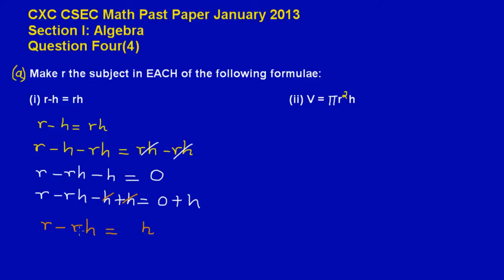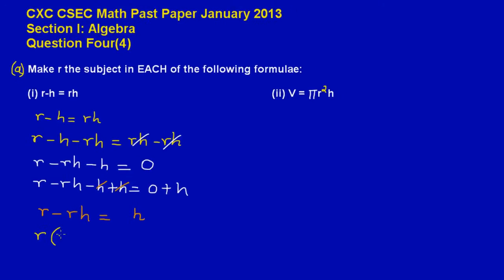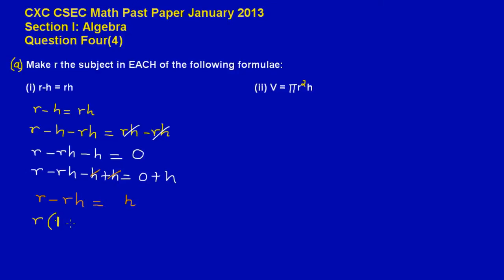Now I have the R's together so we can go ahead and factor out R, since R is common to both terms. I have an R here and an R there. So I take R out and open bracket — R into R goes one time, giving 1, and negative R cancels with R leaving negative H. So we have R times the quantity 1 minus H, close bracket, equal to H.